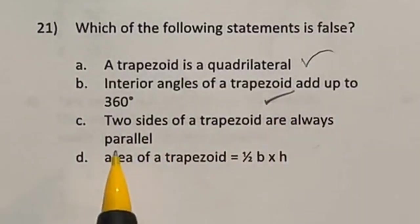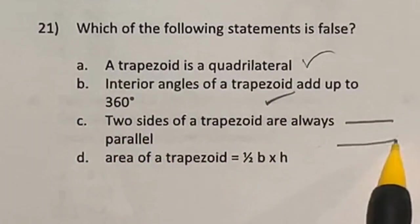Two sides of a trapezoid are always parallel. Indeed, the definition of trapezoid is that two of the sides are parallel.